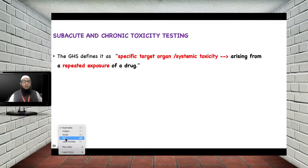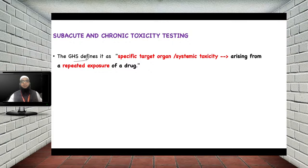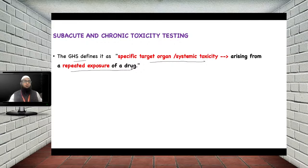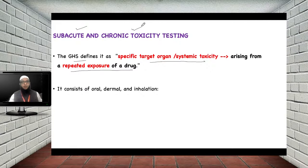Sub-acute and chronic toxicity testing can also be performed. As per GHS guidelines, sub-acute and chronic toxicity is defined as specific target organ systemic toxicity arising from repeated exposure to the drug. This can be assessed via oral, dermal, or inhalation tests depending on the nature of the drug.